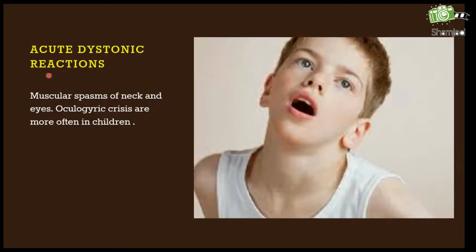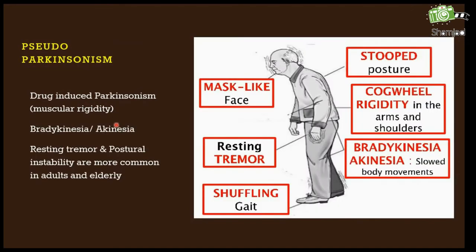The first one is acute dystonic reactions — muscular spasm of the neck and eyes. Oculogyric crises are more common in children, as you can see in this picture.